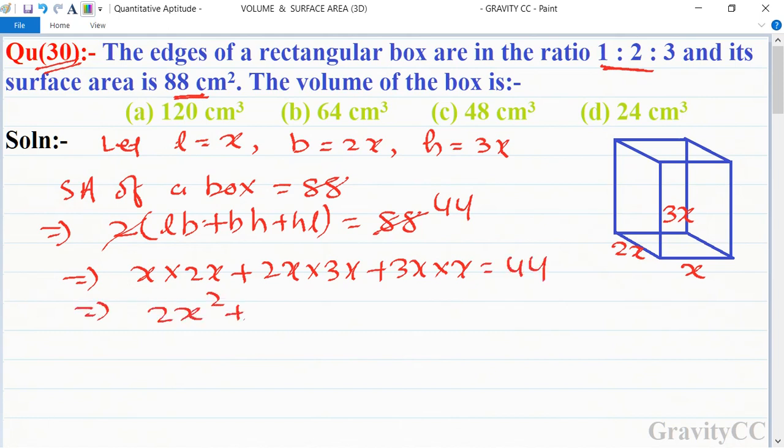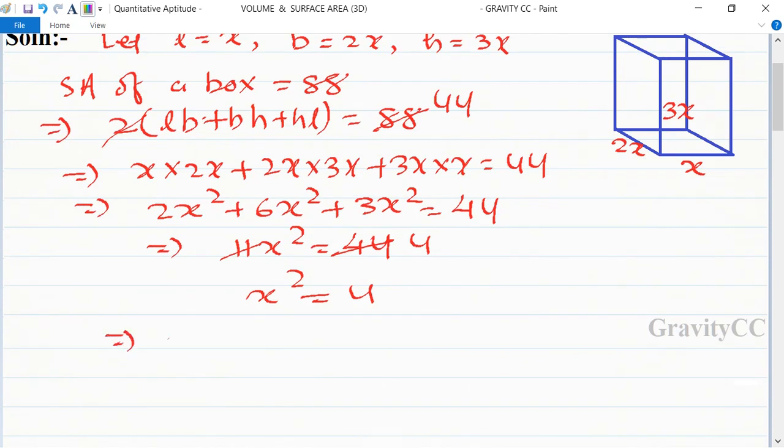that 2x² plus 6x² plus 3x² is equal to 44, so implies that 11x² is equal to 44. So cancel by 4, so x² is equal to 4, so x equal to √4, so 2.